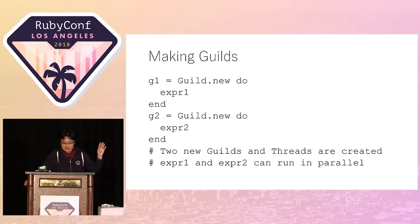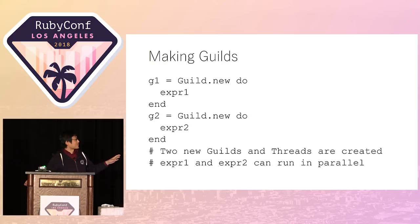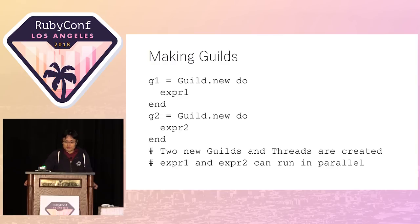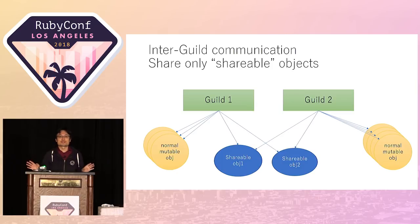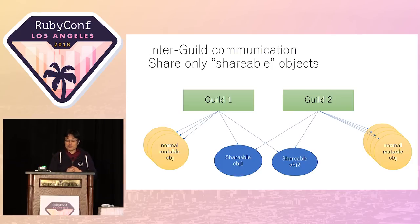This is a simple example of making two Guilds. This is very similar to thread programming in Ruby. You can pass a block to the Guild.new method and each block runs in parallel on each Guild. In this case, expression one and expression two run in parallel. Guild prohibits sharing mutable objects. Normal strings, arrays, hashes, and so on — most Ruby objects are mutable — so we can't share such normal objects between multiple Guilds.